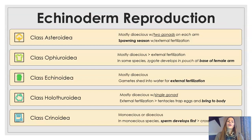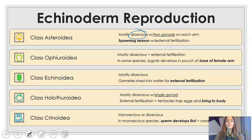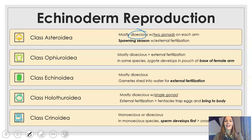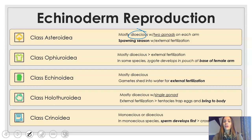In terms of reproduction, they are also a little different. A term that comes up a lot is dioecious, meaning they have separate male and female organs in separate individuals. Class Asteroidea can release over 2 million eggs at a time per individual during extreme spawning seasons, with external fertilization occurring. Spawning is dependent on things like daylight and water temperature. The snake tails and brittle stars also have external fertilization, but the zygote develops at the base of the female arm in some species. Echinoidea do external fertilization.